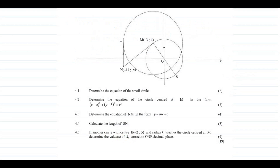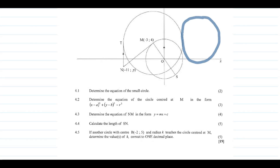Question 4.5: if another circle with center B at coordinates (−2, 5) and radius k touches the circle centered at M, determine the values of k correct to one decimal place. This question is quite tough and somewhat vague — it doesn't specify exactly how the circle with center B touches the circle with center M, so the answers can vary.